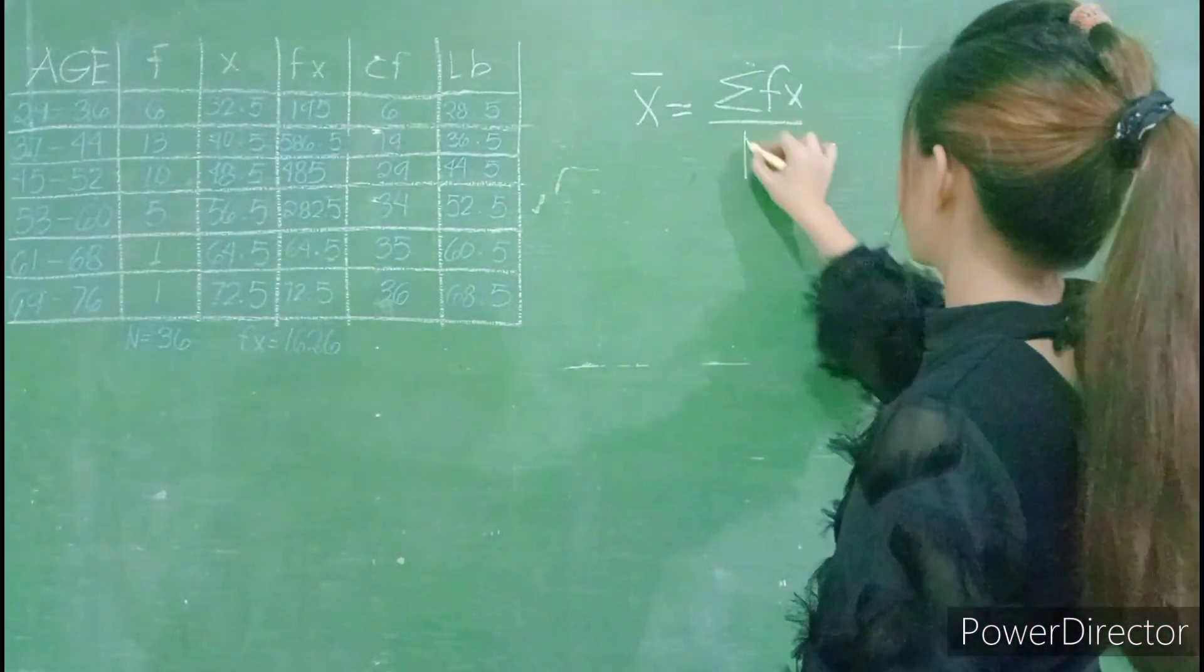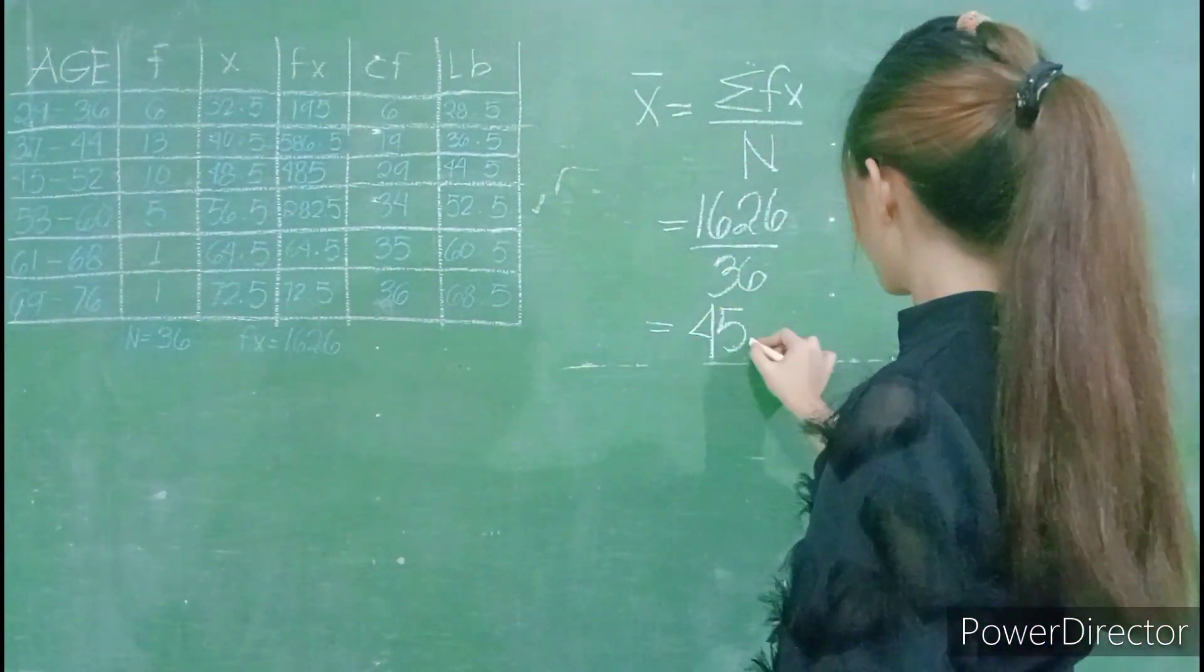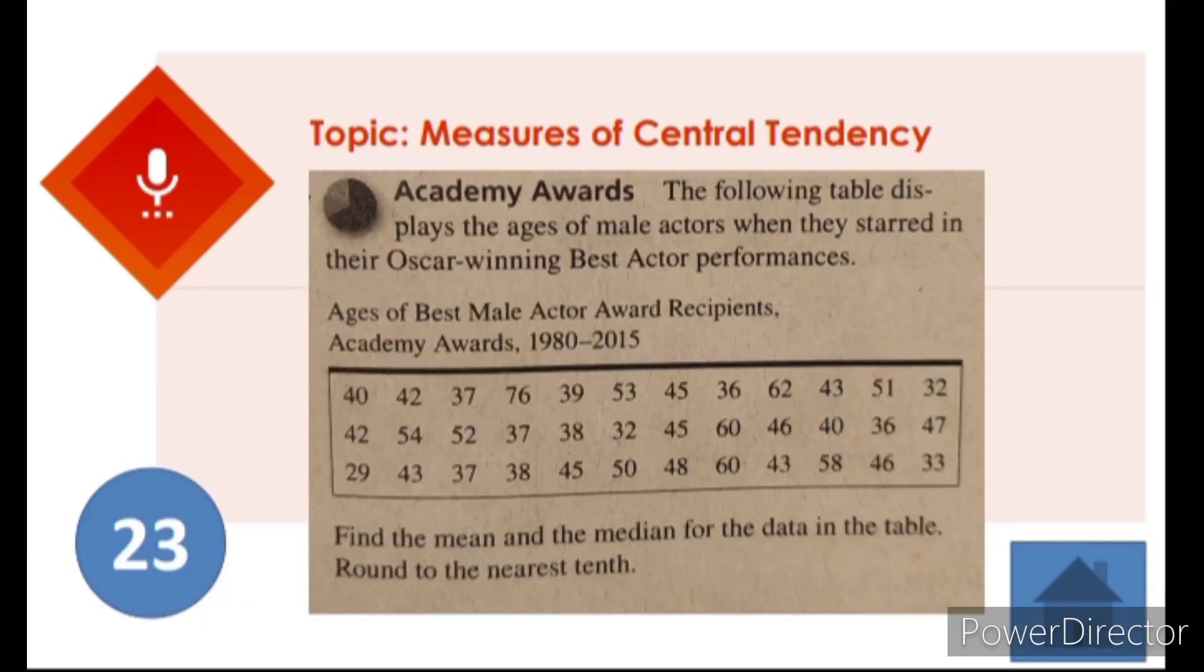Our problem for today is to find the mean and median for the data in the table. The following table displays the ages of male actors when they starred in their Oscar-winning Best Actor performances.